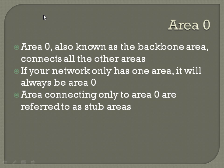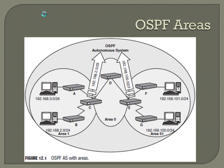Area zero, also known as the backbone area, connects all the other networks. If your network only has one area, it will always be area zero. Areas only connecting to area zero are referred to as stub areas. Since those networks aren't connecting each other elsewhere, they are technically stub areas.